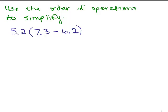Here's an example. What do we do first in the order of operations? We do anything inside parentheses. So this is the 7.3 minus 6.2. You can go over to the side to figure that out — remember we need to line up decimal points. So that is 1.1.